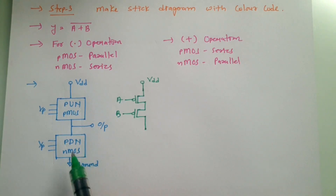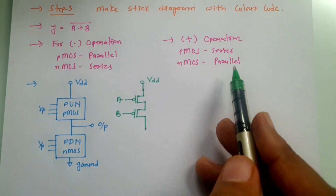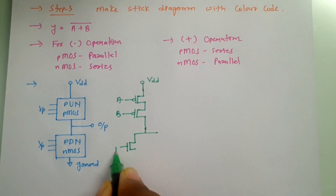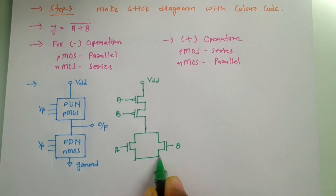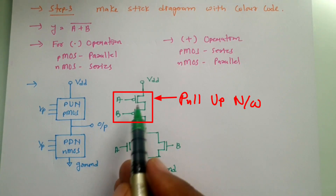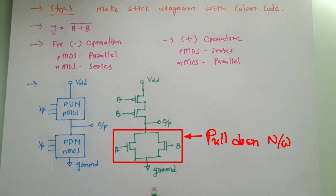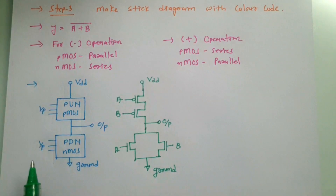For the pull-down network, for a plus (OR) operation NMOS should be in parallel. So in the pull-down network I connect NMOS A and NMOS B in parallel, with ground at the bottom. This is my pull-down network, and the output is taken between the pull-up and pull-down networks. This is the basic CMOS circuit for A plus B whole bar.